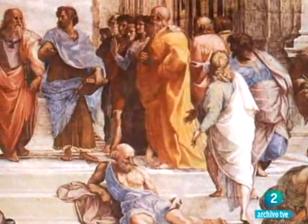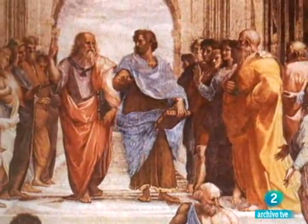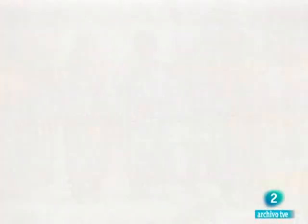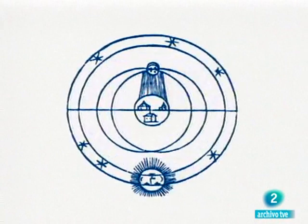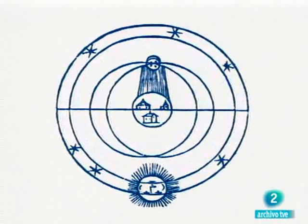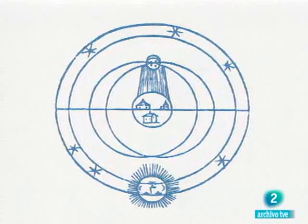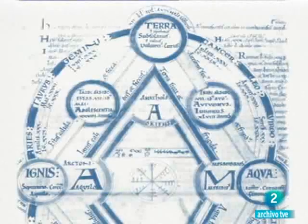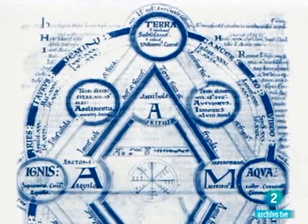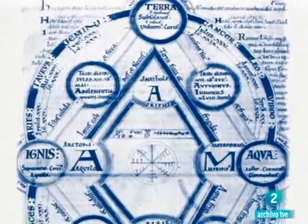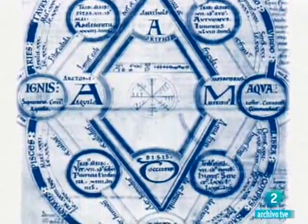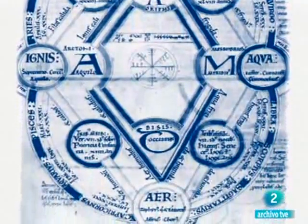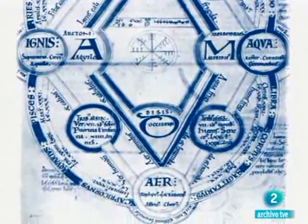Aristóteles situará la Tierra en el centro del universo y el frente de batalla entre el orden y el caos en la esfera de la órbita lunar. Por encima de ella, el mundo celeste, perfecto, inmutable y perpetuo, el reino del orden. Por debajo, el mundo terrestre, constituido por los cuatro elementos: tierra, agua, aire y fuego, intercambiándose entre sí. Un mundo imperfecto, cambiante e impredecible, el reino del caos.